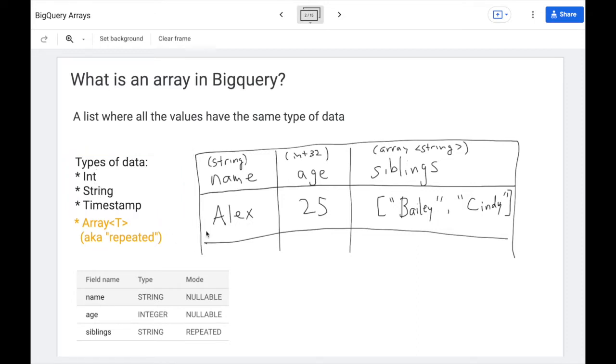So in this example, we have a string field name, an int field age, and now we have an array field siblings, and you can see we can stuff multiple values into a single column, which is really neat. In the BigQuery UI, array fields are also known as repeated fields. So you'll see repeated next to the base type string in this UI.